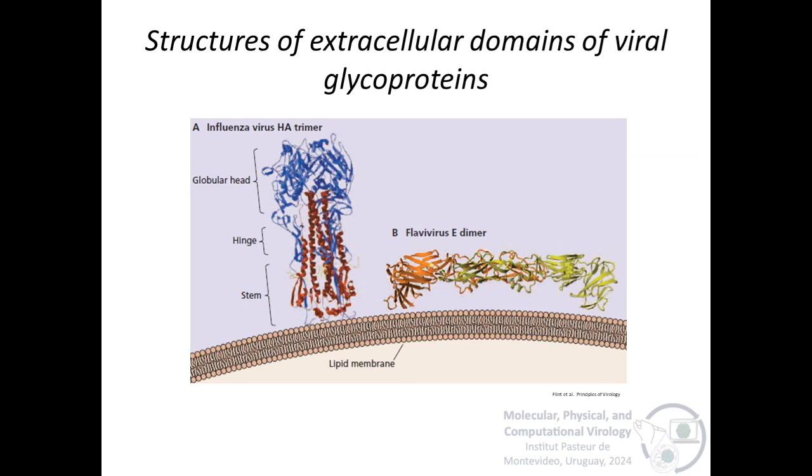The extracellular domain of viral glycoproteins can be a trimer or a dimer perpendicular or parallel to the membrane. The case of the human influenza virus hemagglutinin protein is a trimer containing a globular head and a long stem. In contrast, the outer domain of the flavivirus E protein is a flat elongated dimer that lies on the surface of the viral membrane rather than protruding from it as hemagglutinin does.